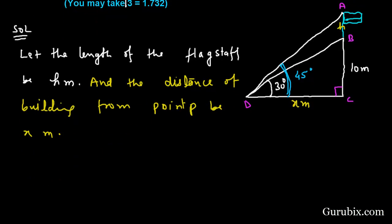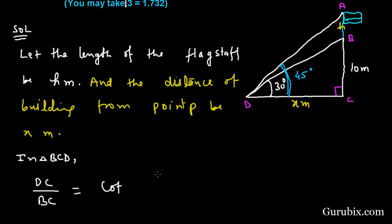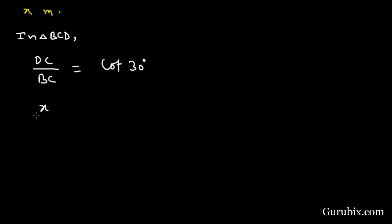Now we shall move to triangle BCD. Here we have to find out the distance DC, and we are given BC. So the ratio is cot theta, where theta is 30 degrees. DC is x and BC is 10 meters. Cot 30 equals root 3, therefore x equals 10 root 3. This is equation number one.